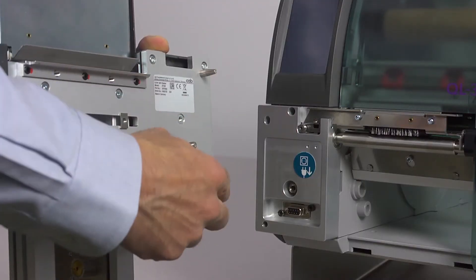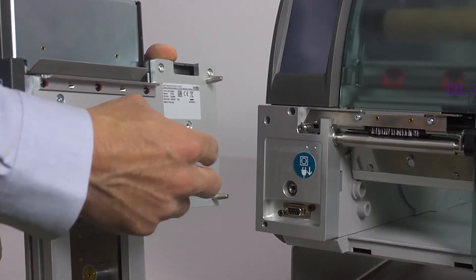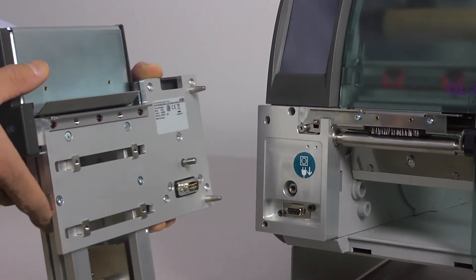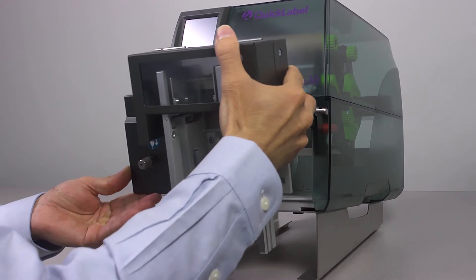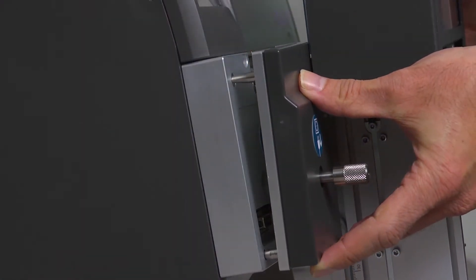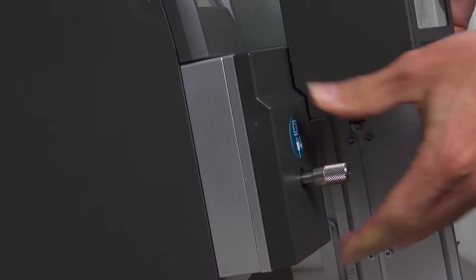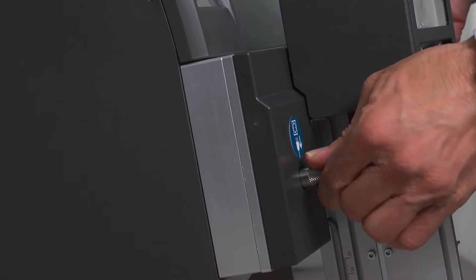Insert the pins of the cutter stacker into the holes on the printer. Press the cutter stacker against the printer so the plug of the cutter stacker can be connected to the peripheral port on the printer. Secure the cutter stacker with the screw.